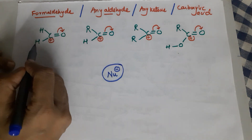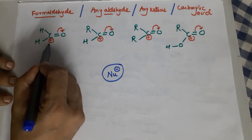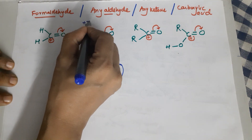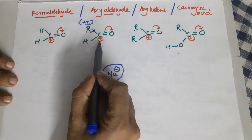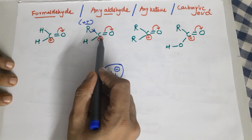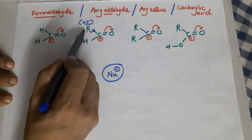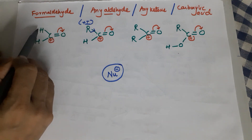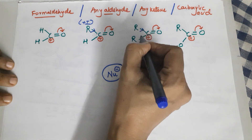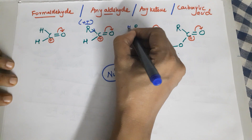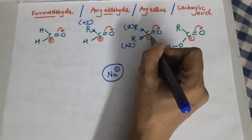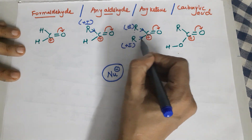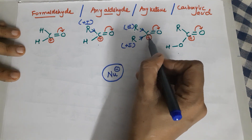In formaldehyde, the carbon is positively charged and there are no donor groups. In an aldehyde, the carbon is positive but the R group has a +I effect — it donates electron density to the carbon, reducing the positive charge somewhat. In a ketone, there are two R groups with a +I effect attached to the carbonyl carbon, so the positive charge is considerably reduced compared to an aldehyde.